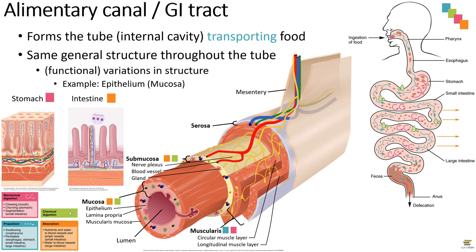As a reminder, the GI tract is a tube, and throughout — from the esophagus all the way to the anus — the general structure of that tube is the same. There are four layers: starting from the lumen, the first is the mucosa, which includes the epithelial lining interacting with food; then the submucosa, containing larger blood vessels and nervous innervation; then the muscularis, containing muscles that move things around the gut and are involved in transporting food; and finally the serosa, the outer layer, which is lubricated and protects the tube. While the general structure is the same throughout, there is lots of variation in some of these structures across different parts of the alimentary canal.